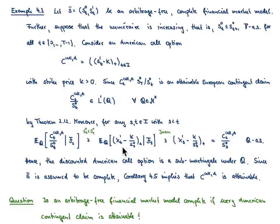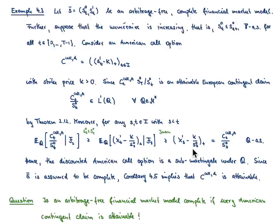In the second step, I apply Jensen's inequality to the positive part function. By bringing it outside the conditional expectation and using the fact that the discounted price process is a martingale under Q, we end up with the positive part of X¹_s minus K/S⁰_s, where we took advantage of that being an F_s-measurable random variable pulled out of the conditional expectation. But this is precisely the definition of the discounted American call option at time point s, which clearly shows it is a sub-martingale under Q.